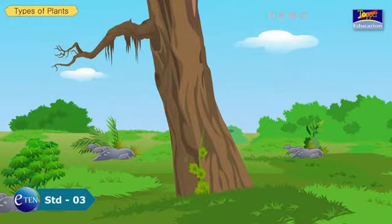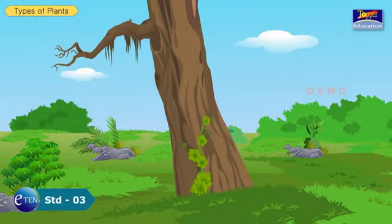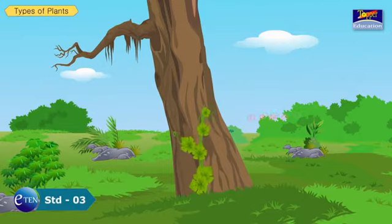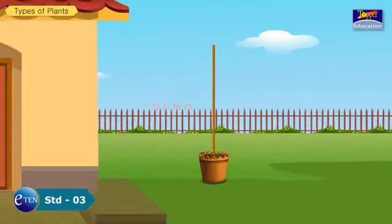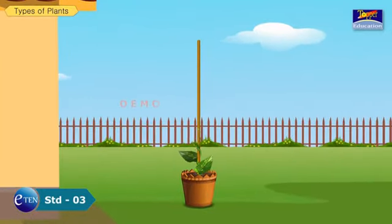Climbers are plants with weak stems. They cannot stand straight on their own and need support from other plants, sticks or walls to grow.